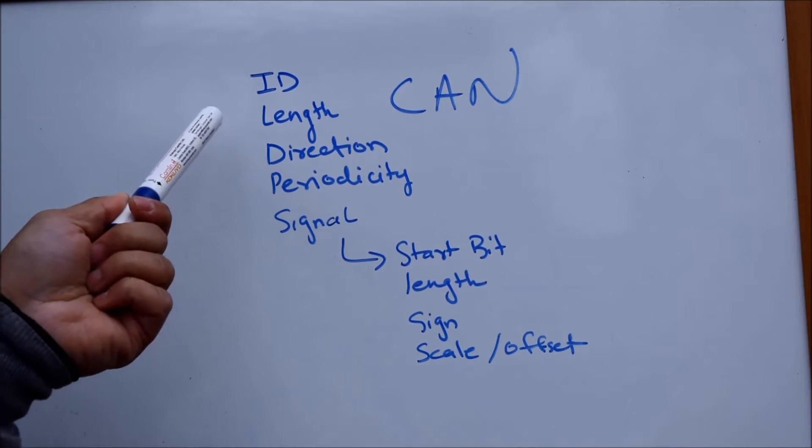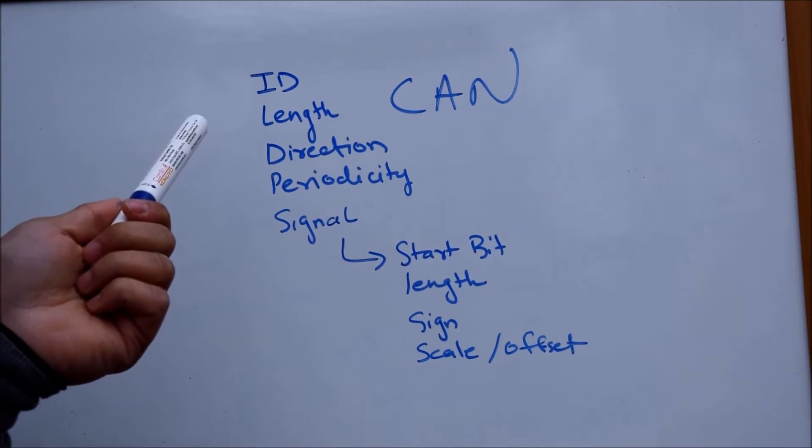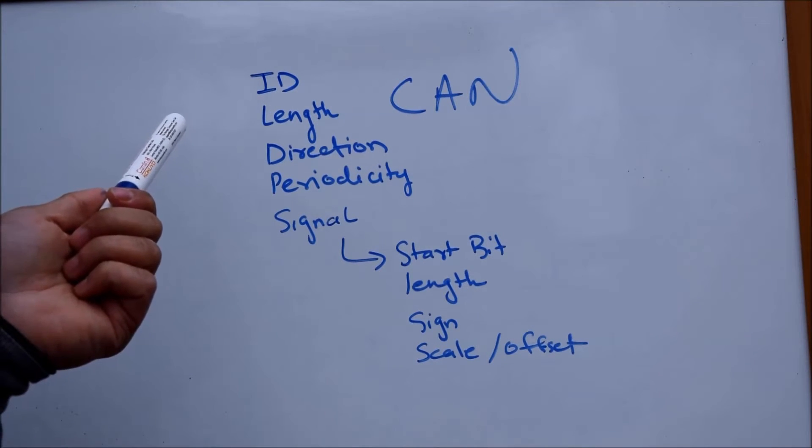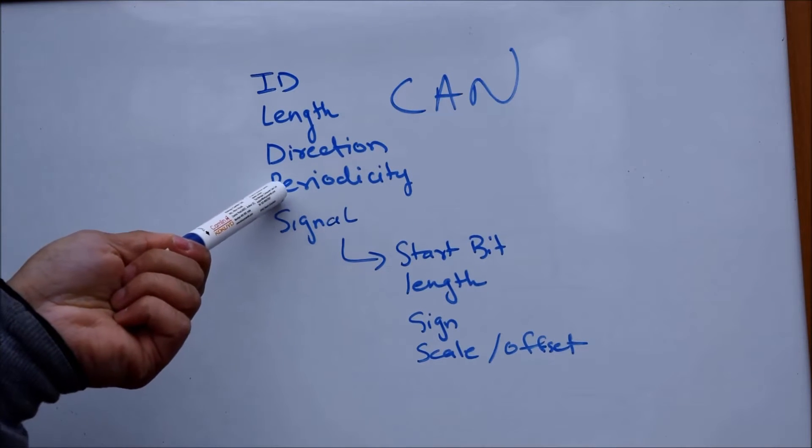Then the third part is the direction, which means whether the message is being transmitted by a particular ECU or being received by a particular ECU. Then how often it is received - that's the periodicity.